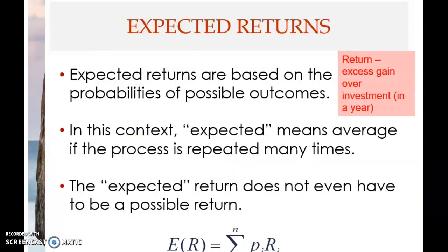Now, what do we mean by expected return of an asset? The expected return is based on the probabilities of possible outcomes. This is actually a technical term. Return first is excess gain over the investment, and normally it's reported for one year. Remember the interest rate we saw in chapter five and chapter six in time value of money — that interest rate is actually the return.